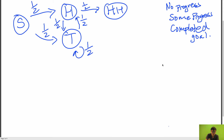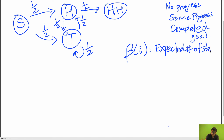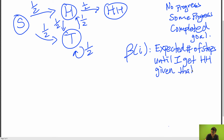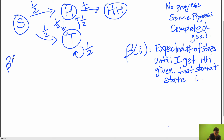Now we have our Markov chain, and I'm going to define the notation beta_i, which is the expected number of steps until I get heads-heads, given that I start at some state i. We know off the bat that beta of heads-heads equals zero, since if we are already at that state, the expected number of steps until we get there is just zero.